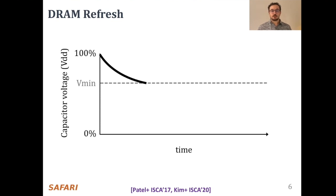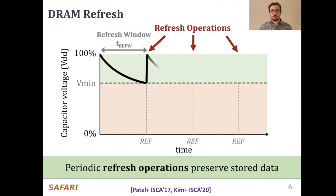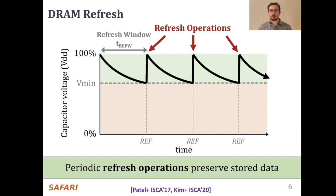There is a threshold voltage Vmin above which the stored data can be read successfully. However, as soon as the voltage drops below Vmin, a bitflip can occur. In order to prevent failures from charge leakage, periodic refresh operations are issued to restore the capacitor voltage. The interval between refresh commands is referred to as the refresh window.